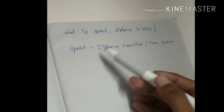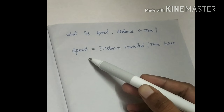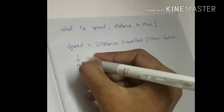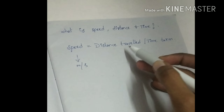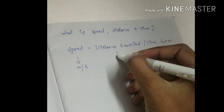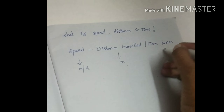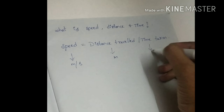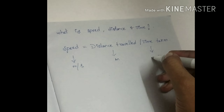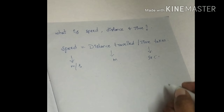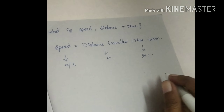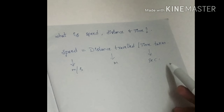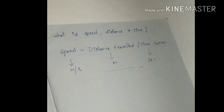The SI unit of speed is meters per second, the SI unit of distance is meters, and the SI unit of time is seconds. This is the basic concept about speed, distance, and time. Thank you.